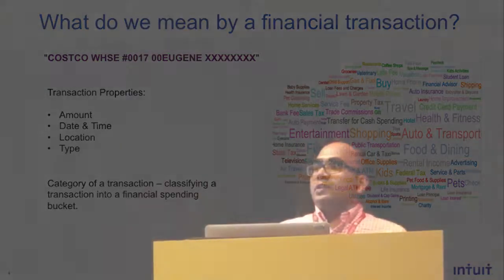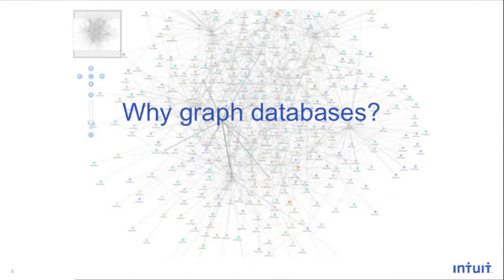Now the question is: why graph databases? Financial transactions are semi-structured, hierarchical type of data, and there exists a relationship between consumers and merchants when they perform financial transactions. In order to better represent and understand these relationships, graph databases are one of the most effective ways, as relationships are first-class citizens in graph databases. For example, if a user shops at Costco, Walmart, or Target, there is a relationship between the user and the merchant that can be represented very well in graph databases.